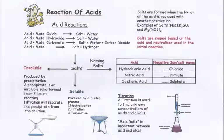Acid reactions. There are 4 acid reactions, 3 of which are neutralisation. First one, acid and a metal. This will always give you the metal salt with hydrogen gas. This is not a neutralisation reaction.